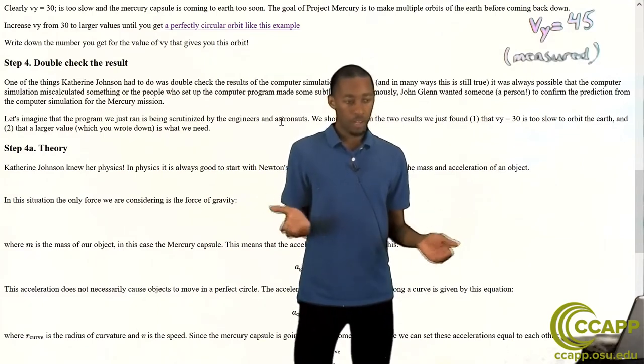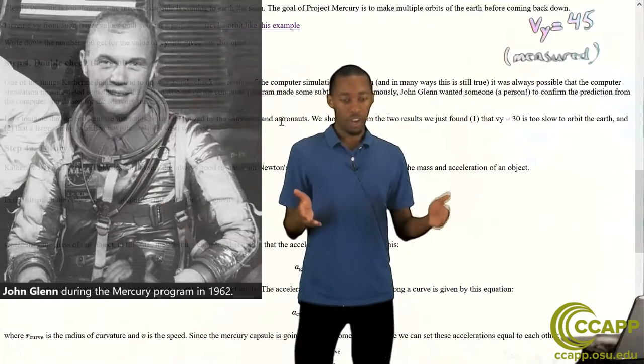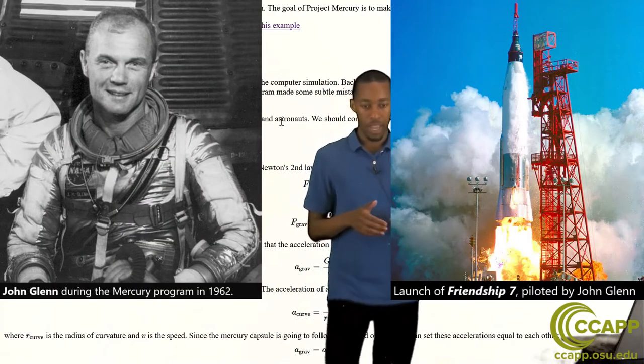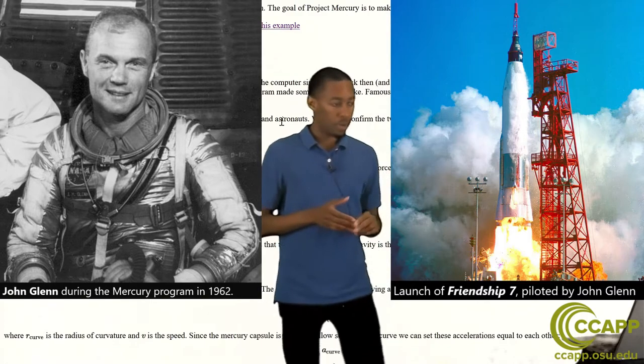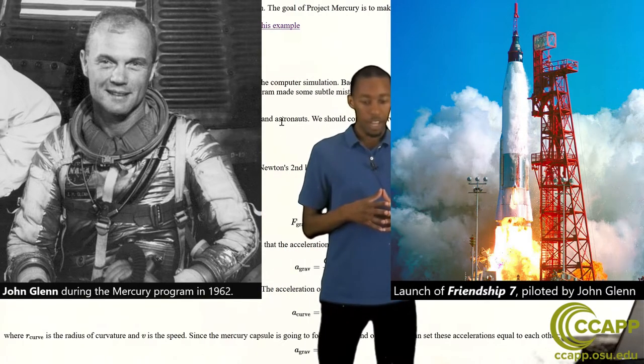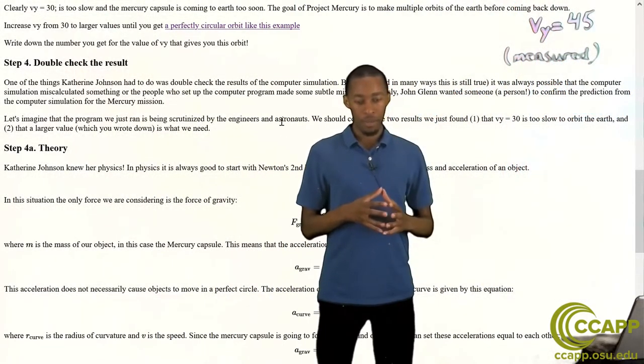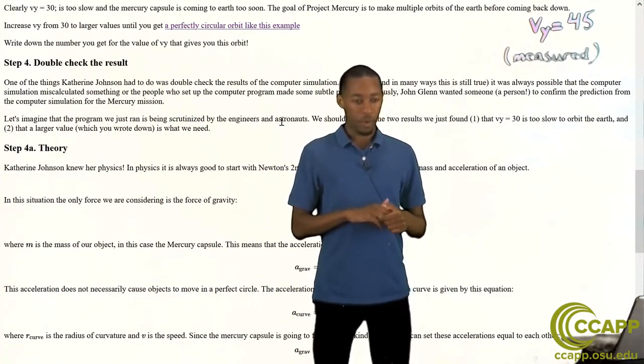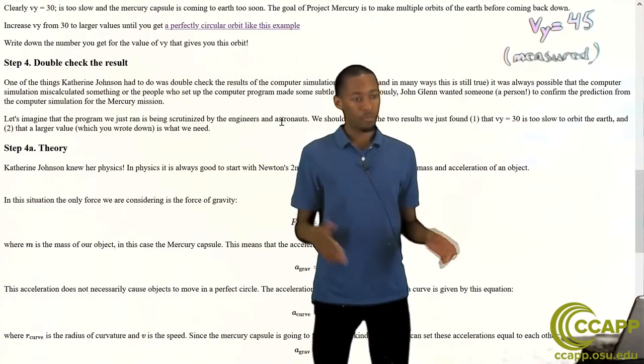And if you're an astronaut, like one of Ohio's own John Glenn, who was actually the astronaut that was in the capsule that Katherine Johnson helped calculate orbits for, you don't want to put your life on the line for a computer that might have a bug in it. Nowadays a lot of times the worst that can happen with a computer bug is your code takes too long to run or it crashes.